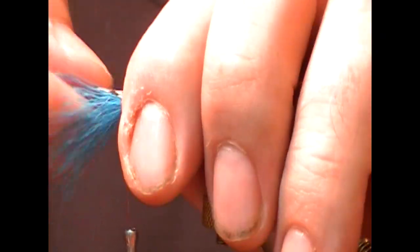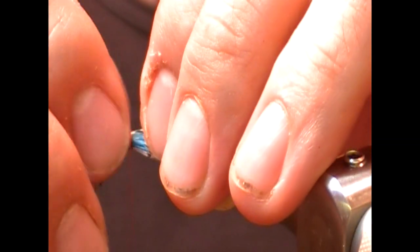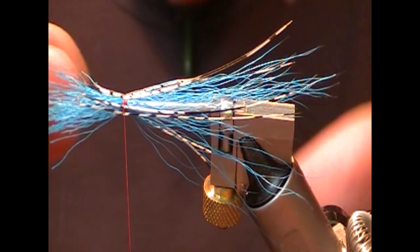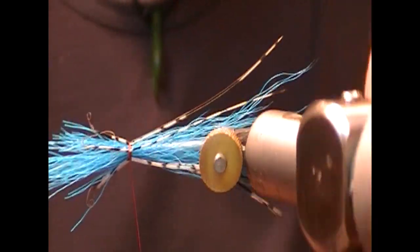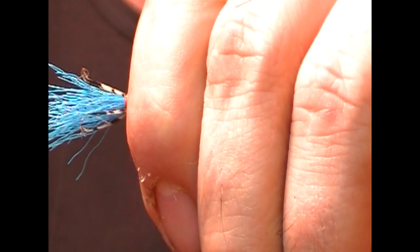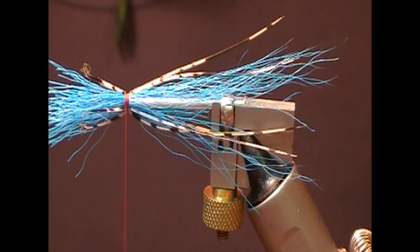Set that up on the hook, let it splay around and then just using my nail I'm just going to change the butt bits of them so that they're kind of spread out all the way around. And then a few turns across that to tighten in place.